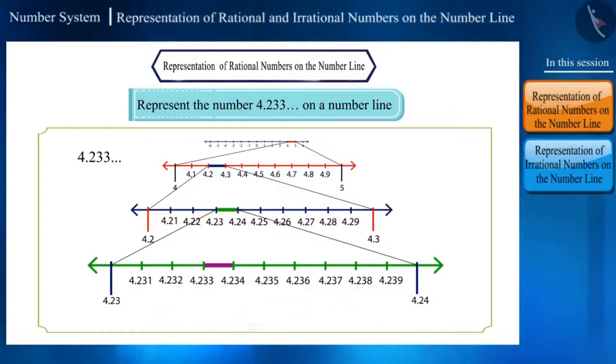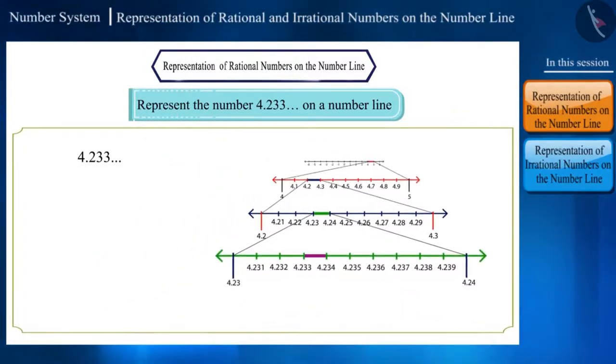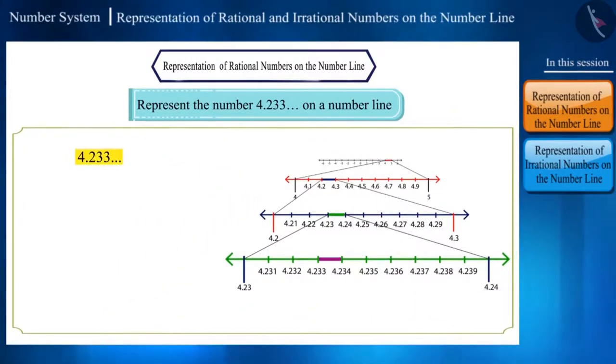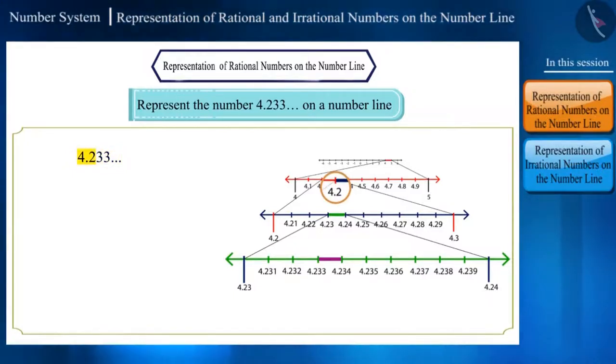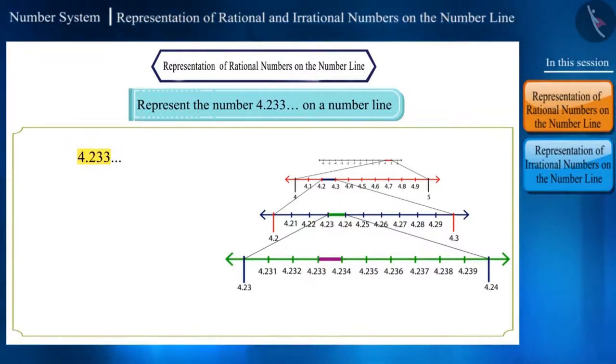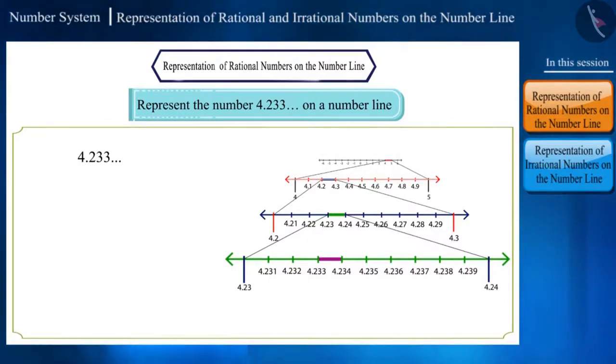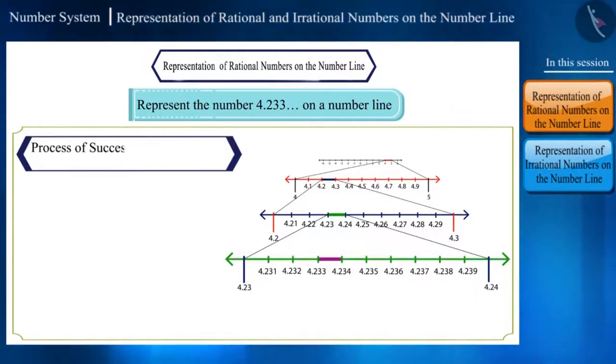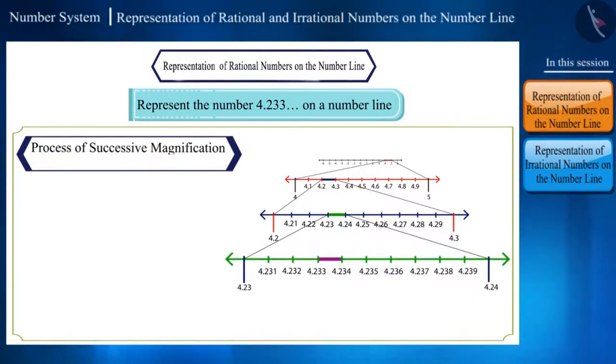So, representing any number on the number line depends on how many numbers after the decimals are to be considered while representing them. To accurately or precisely locate the number on the number line, we had to divide or magnify the number line into many such 10 equal parts. So this process is called as successive magnification.